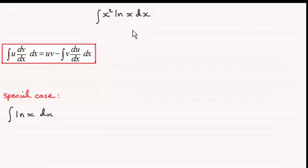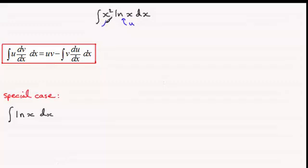What we do is we always label the natural log function u. So with this example, the integral of x squared natural log of x — this would be the u. And this part here, x squared, is the dv by dx.